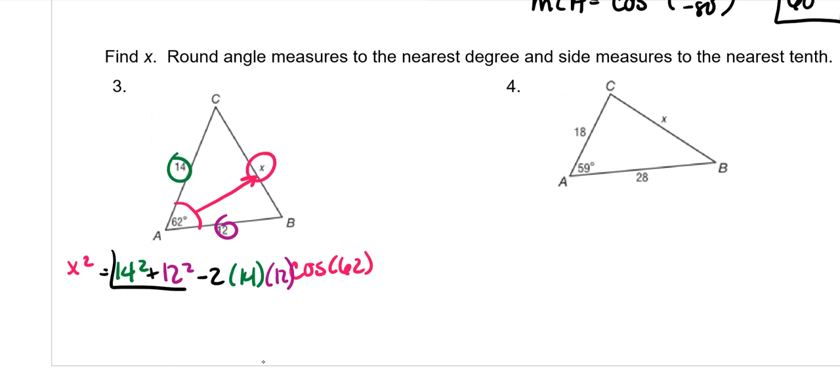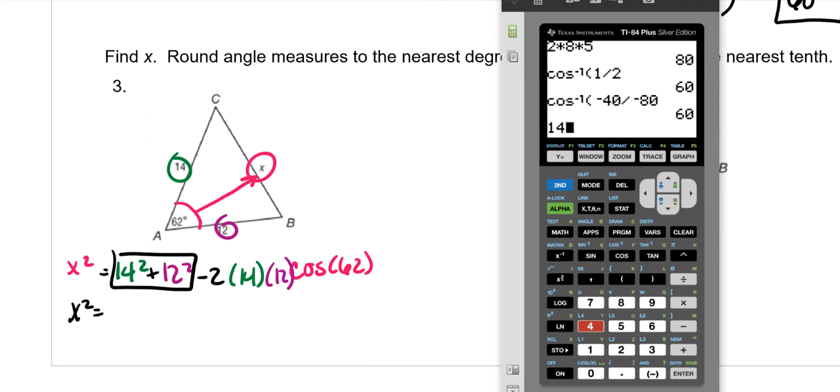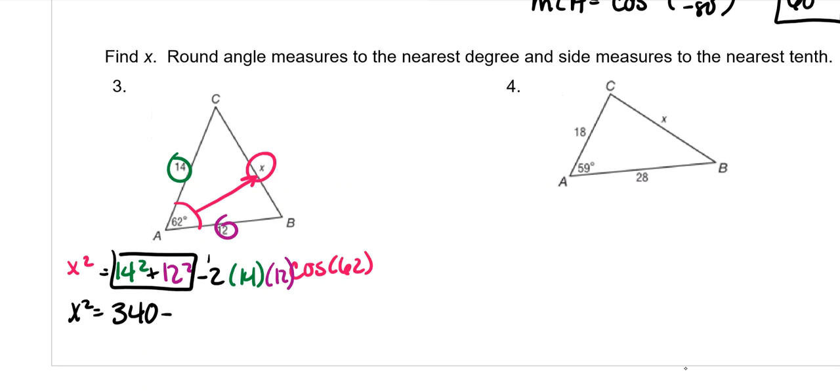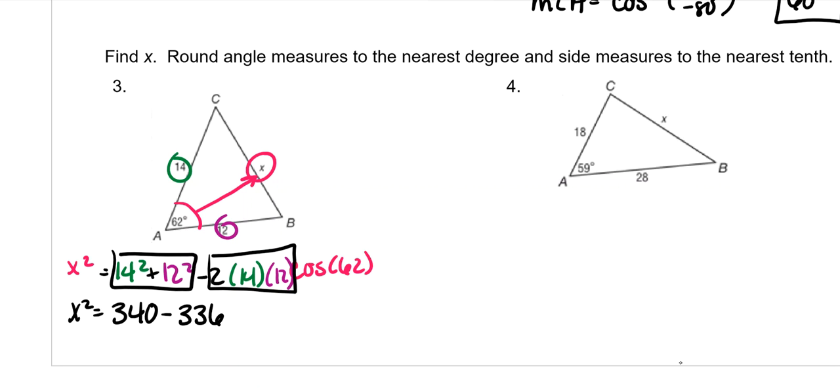14 squared plus 12 squared. That's 340 minus, and then we put all of this part in the calculator. 2 times 14 times 12, which is 336 cosine of 62. Do not ever try to combine these. You can't do that because this right-hand side over here has the cosine with it. So don't try to combine these. You can't.